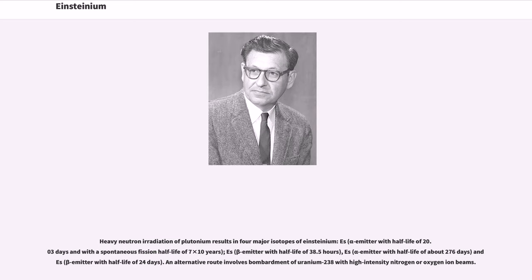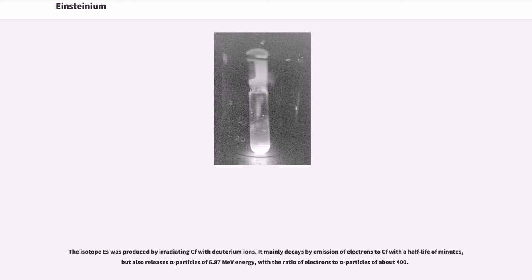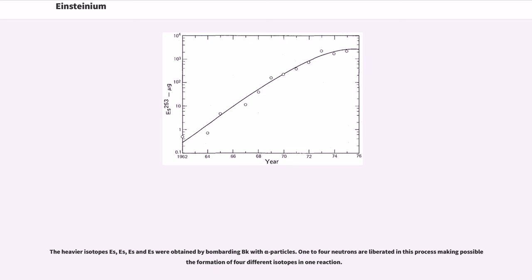An alternative route involves bombardment of uranium-238 with high-intensity nitrogen or oxygen-ion beams. Es-248, Einsteinium-247, half-life 4.55 minutes, was produced by irradiating americium-241 with carbon or uranium-238 with nitrogen-ion beams. The latter reaction was first realized in 1967 in Dubna, Russia, and the involved scientists were awarded the Lenin Komsomol Prize. The isotope Es-248 was produced by irradiating Cf-249 with deuterium ions. It mainly decays by emission of electrons to Cf-248 with a half-life of minutes, but also releases alpha particles of 6.87 mega electron volts energy, with a ratio of electrons to alpha particles of about 400. The heavier isotopes Es-253, Es-254, Es-255, and Es-256 were obtained by bombarding Bk-249 with alpha particles. One to four neutrons are liberated in this process making possible formation of four different isotopes in one reaction.